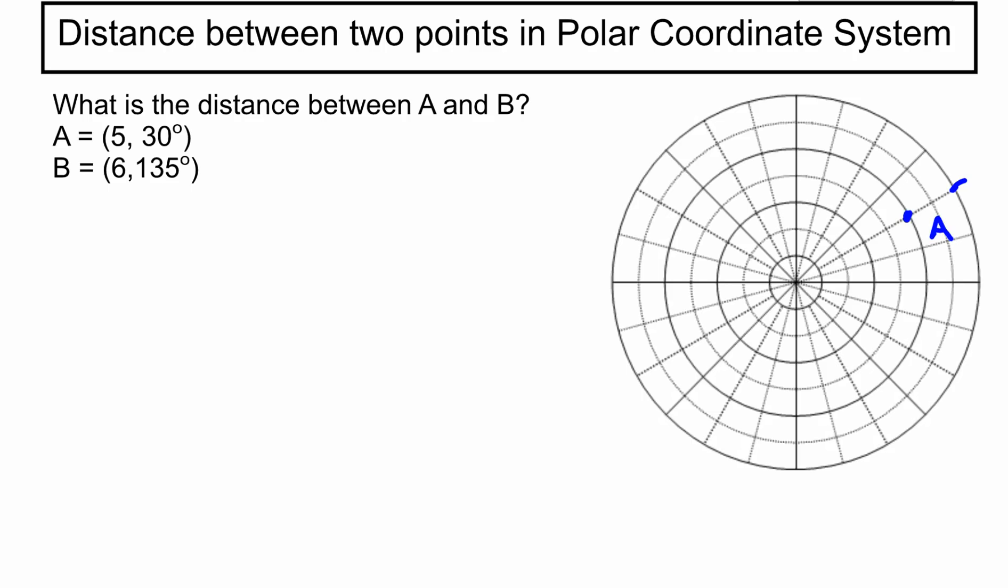And then point B is going to be 6, 135. So 135 is there at that red tick mark. And we go out 6. So this point here is going to be B. And what we're trying to figure out is the distance between A and B.